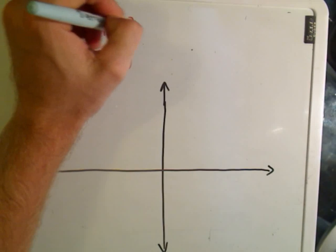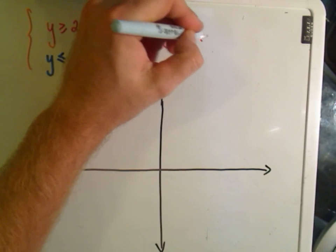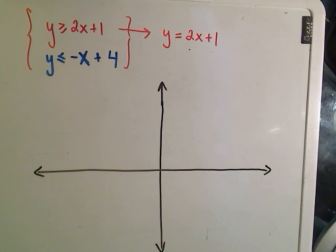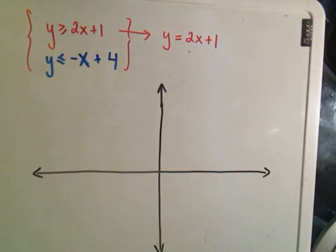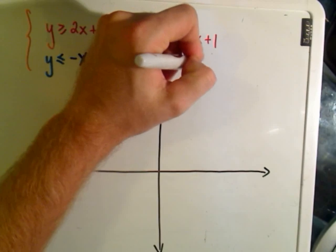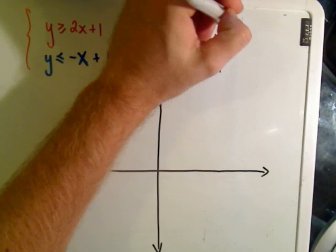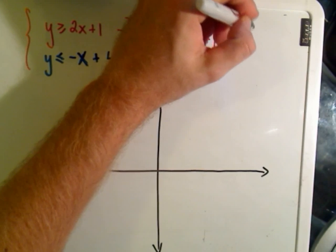Well, to graph these I pretend basically it says y equals 2x plus 1, and I recognize that as being in slope-intercept form, where the coefficient on the x, remember that's our slope. So our slope in this case is 2 over 1, and then the number just hanging out, that's our y-intercept.